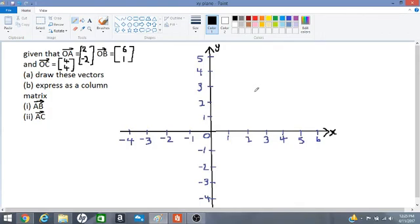Good day. Let's work out this vector problem. We have three position vectors given to us. We have the column matrices representing their location. So OA is 2, -2, OB is 6, 1, and OC is 4, 4.